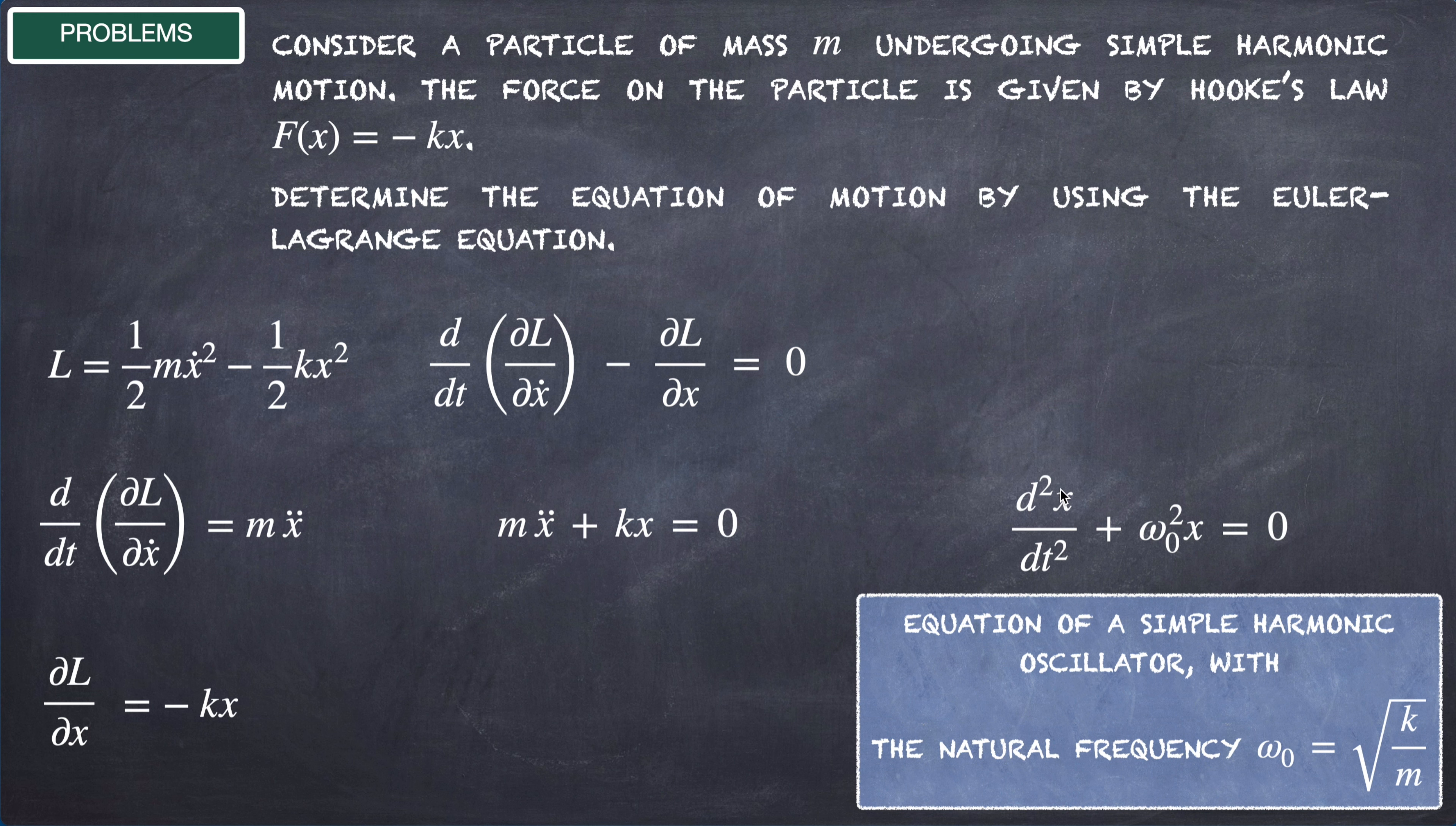We are going to call k/m = ω₀². This is the familiar equation of a simple harmonic oscillator, ẍ + ω₀²x = 0, with the natural frequency ω₀ = √(k/m).